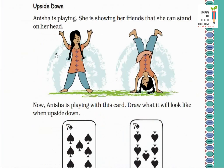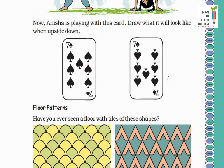Now next: Upside down. Anissa is playing. She is showing her friends that she can stand on her head. Anissa was telling her friends, 'Look, I can stand on my head like this.' Now Anissa is playing with this card. Draw what it will look like when upside down. Look, Anissa showed her friend by turning upside down. Now look here, Anissa was playing with a card. Now we have to tell that if we turn the card upside down, how will it look? So look, when we turn this card upside down, it looks like this.